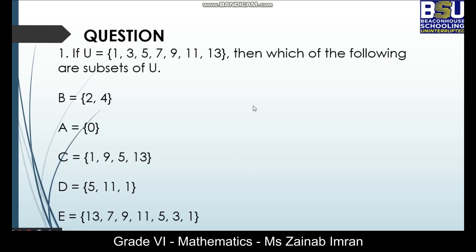Now it's your turn. You have to solve these questions. Question number 1. If universal set has elements 1, 3, 5, 7, 9, 11 and 13, you have to tell which one from these A, B, C, D, E are the subsets of universal set.